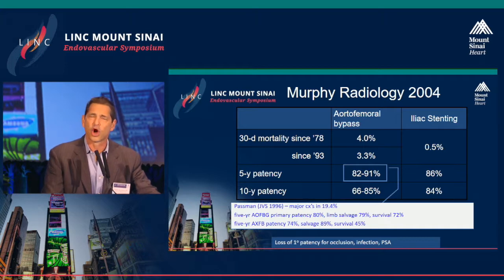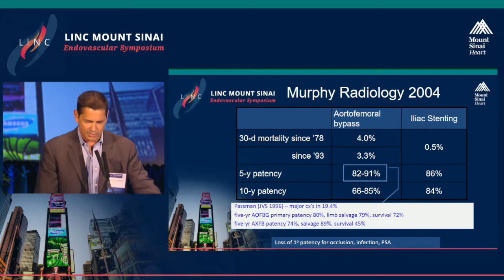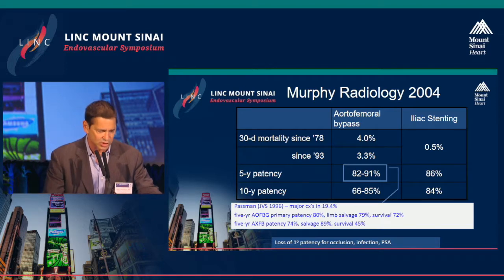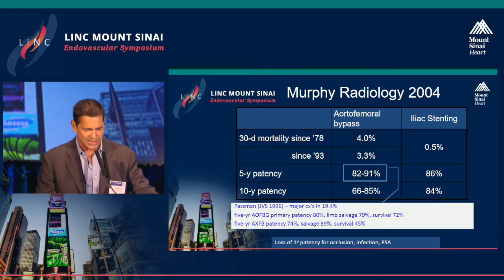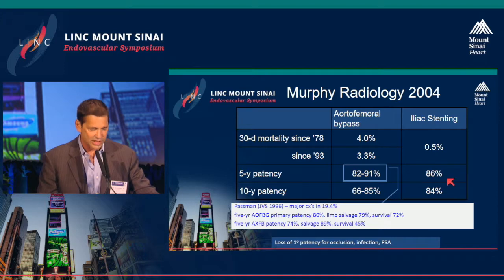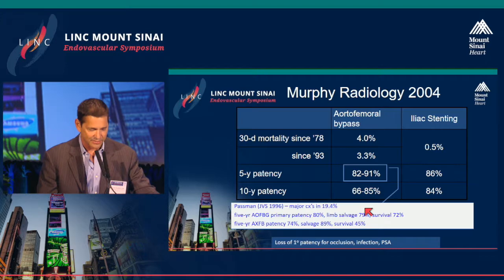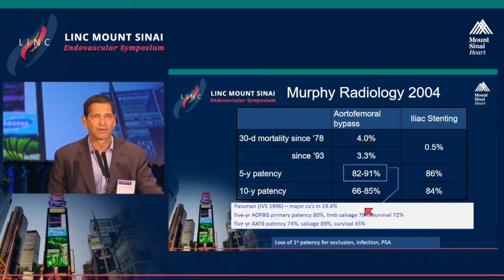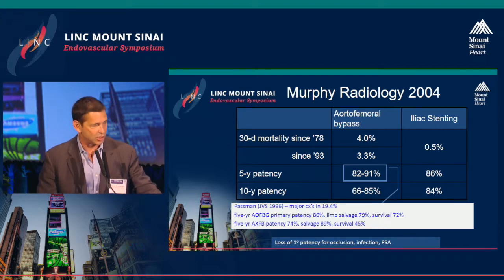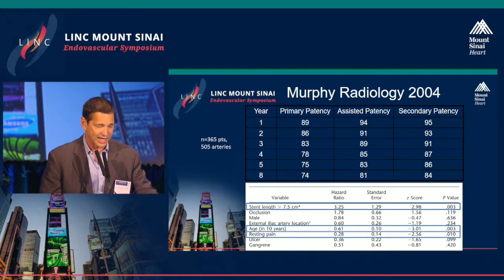Looking at long-term data comparing endovascular first versus surgery — this is from Tim Murphy, a pioneer in this through the late 1990s and early 2000s. You can see aorto-femoral five-year patency in the 80-90% range. Iliac stenting with reintervention is now fairly comparable to that but with lower complications — you can see the complication rates that come with major abdominal surgery. Increasingly, whenever possible, you're going to see endovascular options in pretty much all operators' hands.